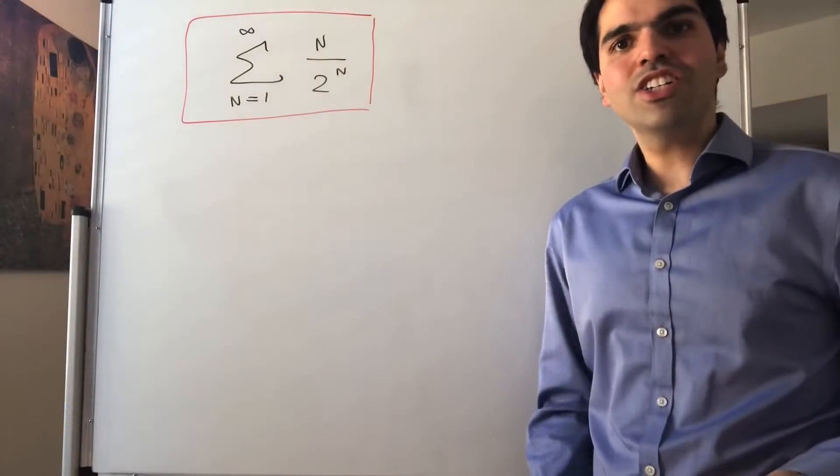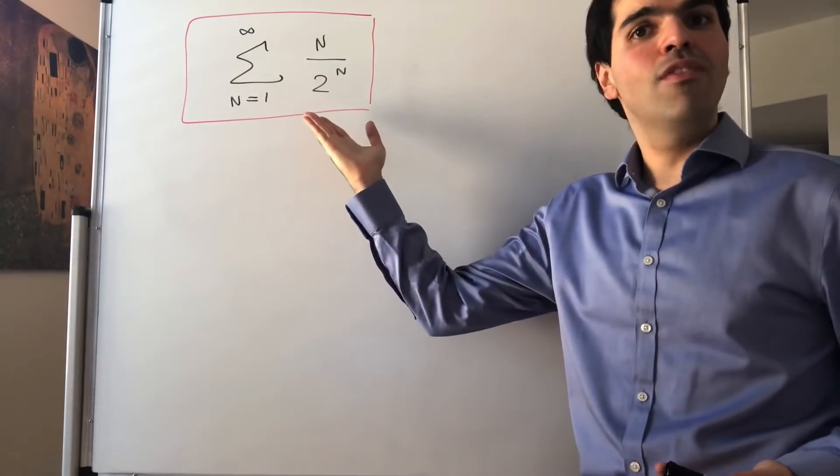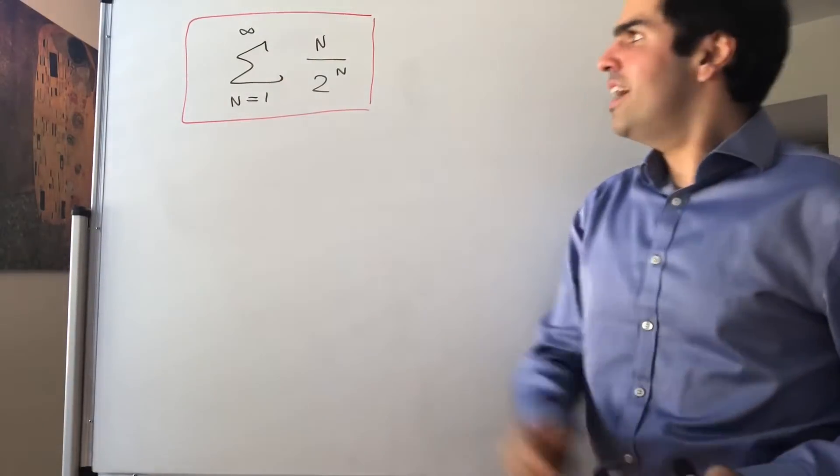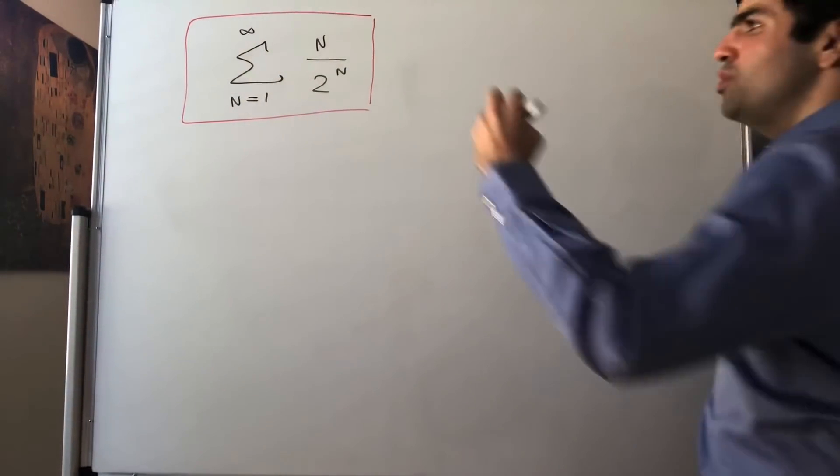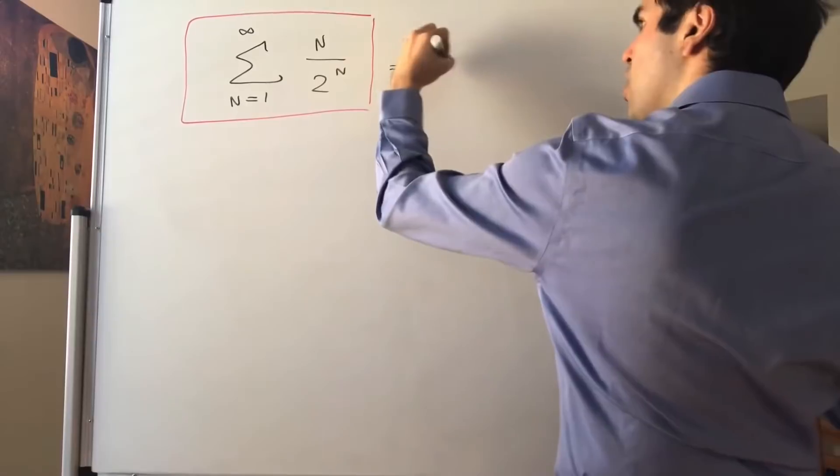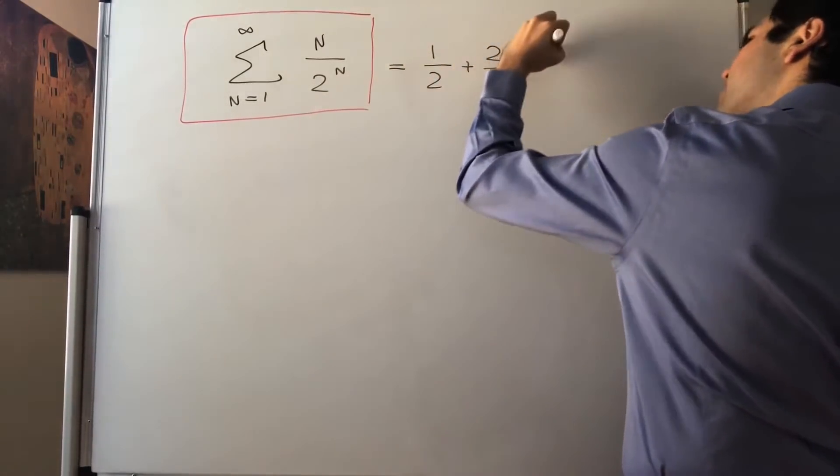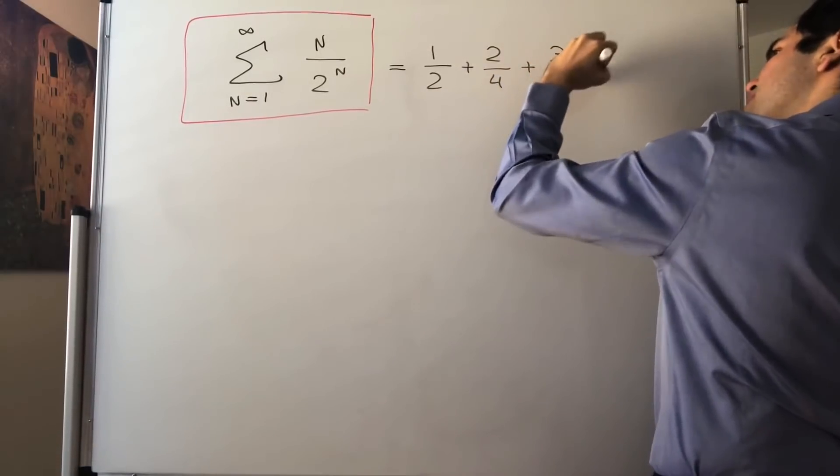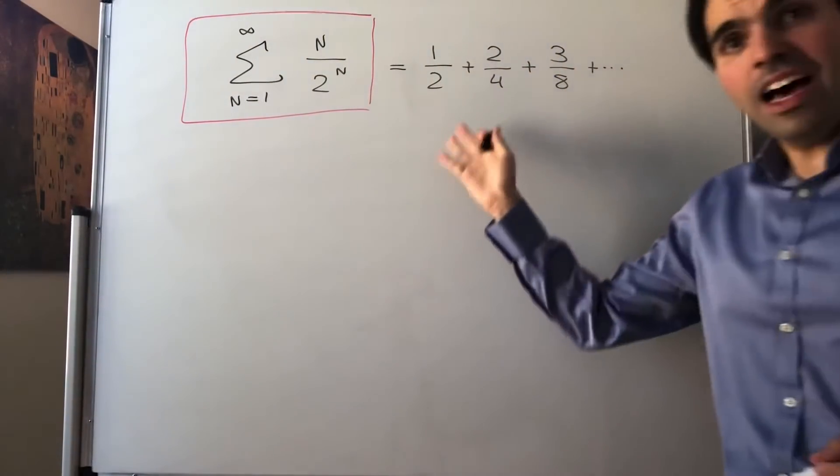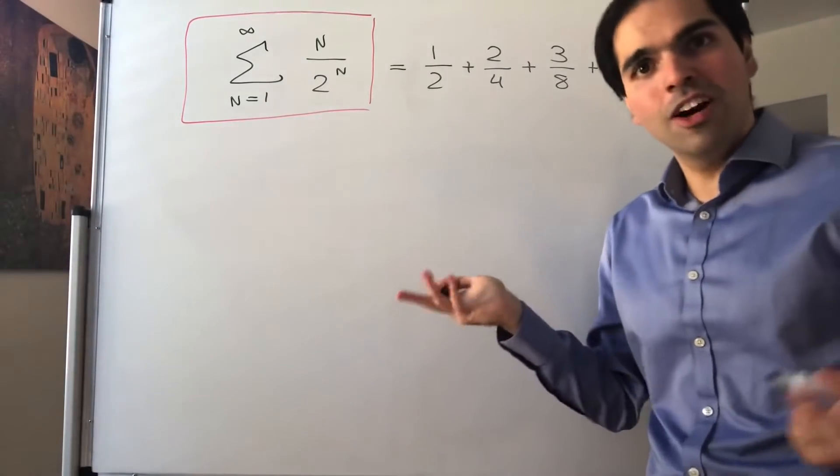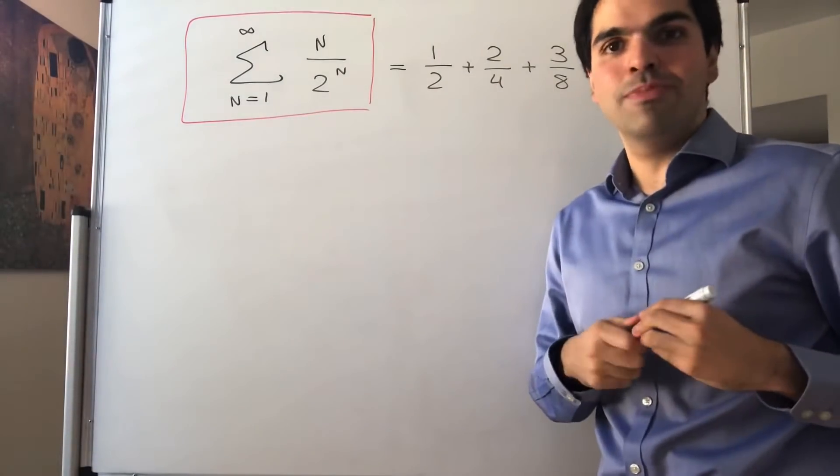All right, thanks for watching, and today I'll calculate the value of the following sum. The sum of n over 2 to the n, which is just 1 half plus 2 quarters plus 3 eighths, etc. And what makes this so nice, this is one of the rare sums that we can evaluate explicitly.